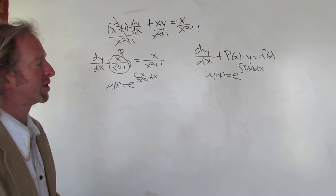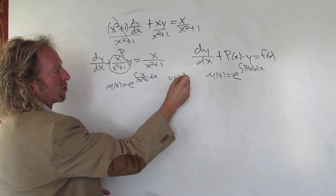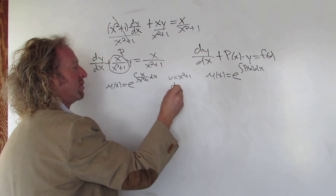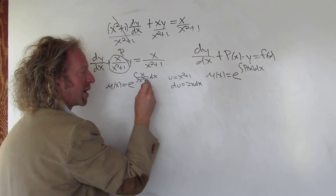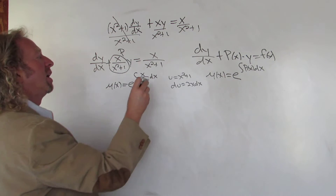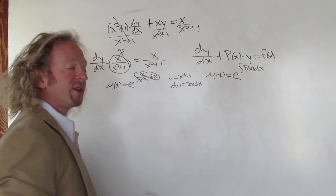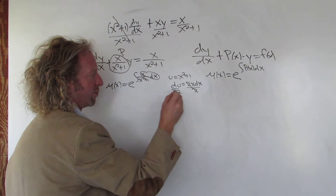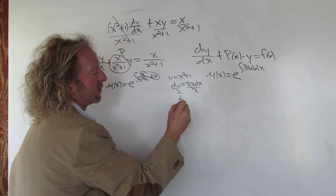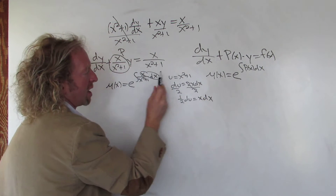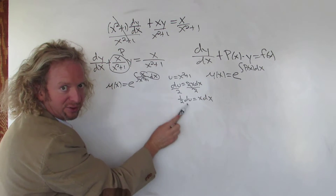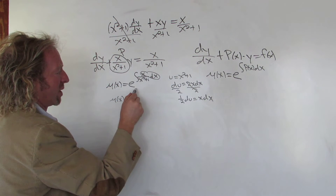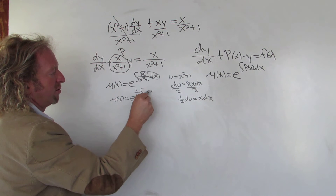To do this integral we can do a u-substitution. We let u = x²+1, so du = 2x dx. It doesn't quite match what we have in the integrand — we have x dx, not 2x dx — so we divide by 2 to make it match. That gives us 1/2 du = x dx. Now we replace x dx with 1/2 du.